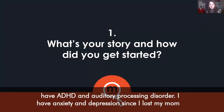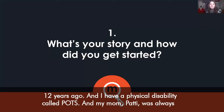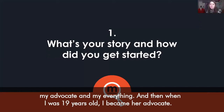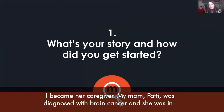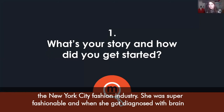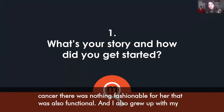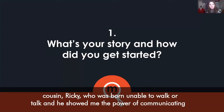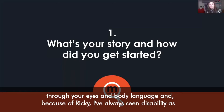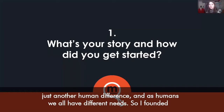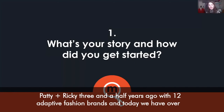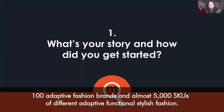I myself have a lot of invisible disabilities — I am dyslexic and have ADHD and auditory processing disorder. I have anxiety and depression since I lost my mom 12 years ago, and I have a physical disability called POTS. My mom Patty was always my advocate, and when I was 19 I became her caregiver. My mom Patty was diagnosed with brain cancer and was in the New York City fashion industry — super fashionable — but when she got diagnosed there was nothing fashionable that was also functional. I also grew up with my cousin Ricky, who was born unable to walk or talk, and he showed me the power of communicating through your eyes and body language. I've always seen disability as just another human difference. Today Patty and Ricky has over 100 adaptive fashion brands and almost 5,000 SKUs of different adaptive, functional, stylish fashion.